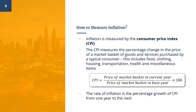Let's move on to how to measure inflation. Inflation is calculated by measuring changes in the cost of living. The official method is the Consumer Price Index, or CPI. The CPI measures the percentage change in the price of a market basket of goods and services purchased by a typical consumer or household. This includes food, clothing, housing, transportation, health, and other miscellaneous items.